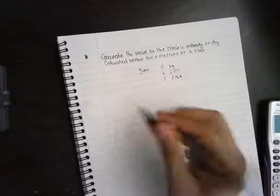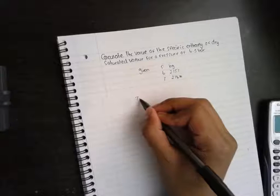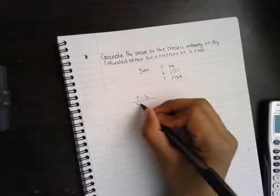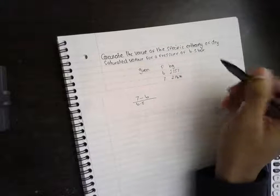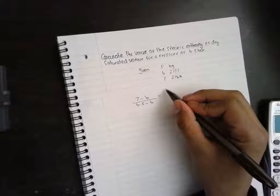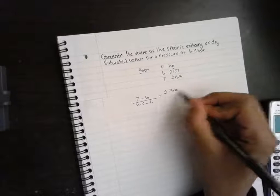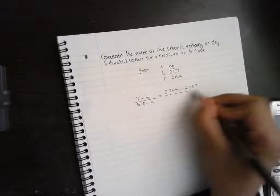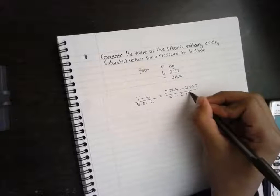So what I normally do is 7 minus 6 over 6.5, which is the pressure at which I want to find the specific enthalpy for, minus 6 equals 2764 minus 2757 over the variable x minus 2757.